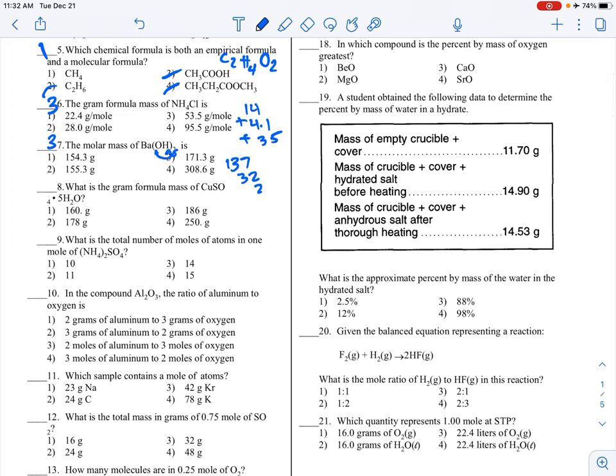The gram formula mass of this hydrate, it's on two different lines. I know the GFM of water is 18, so 5 times 18 is 90. That's the hydrate part. Copper is 64, sulfur is 32, and 4 oxygens is 16 times 4, so that's 64. That's 160. So 160 plus 90 gives you 250 grams per mole, choice 4.